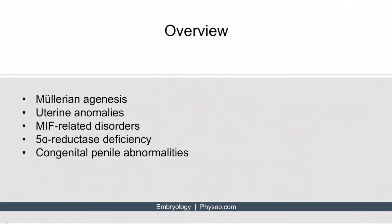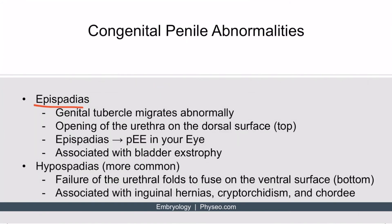Now let's discuss congenital penile abnormalities. There are two: epispadias and hypospadias. Epispadias occurs when the genital tubercle migrates abnormally, resulting in an opening of the urethra on the dorsal surface, or top part, of the penis. You can remember this with the mnemonic: the dorsal opening would result in pee in your eye — all the E's remind you of epispadias, and peeing upward means the defect is on the top. Epispadias is also associated with increased incidence of bladder exstrophy, a rare condition where the bladder is exposed through an opening in the abdomen.